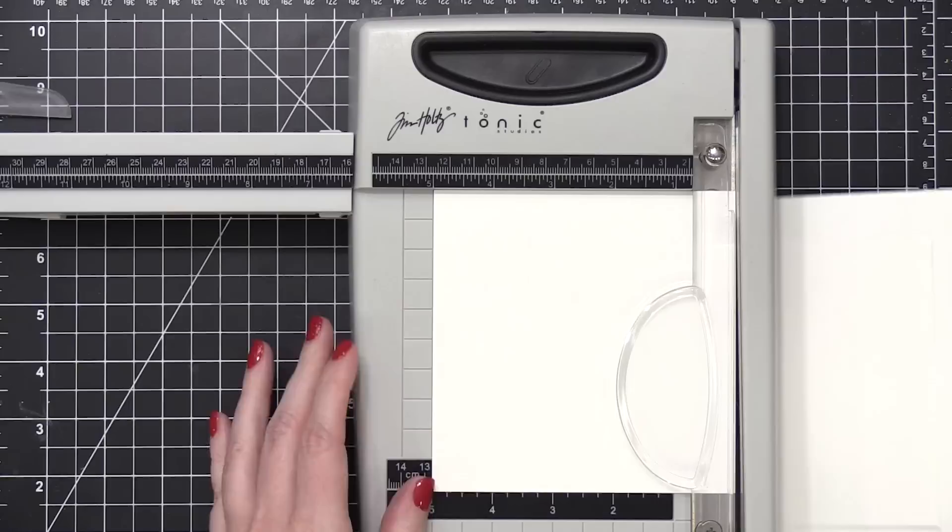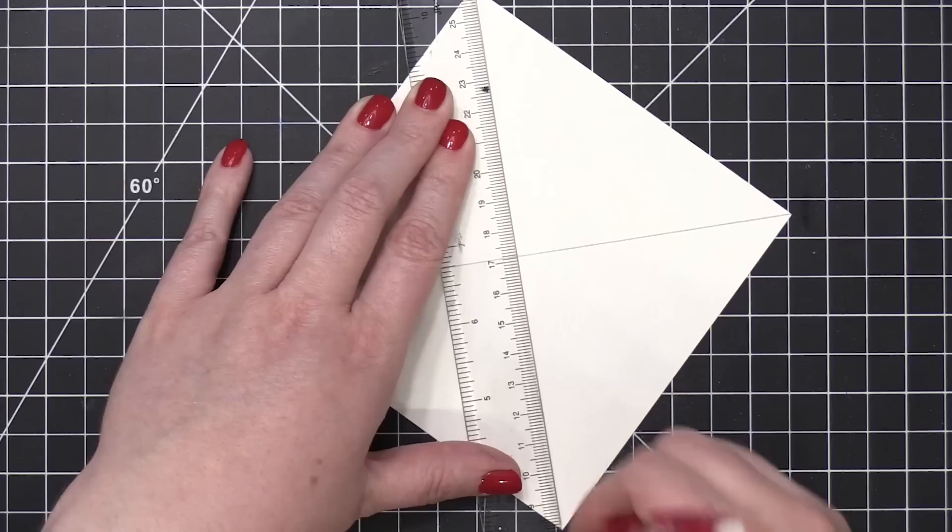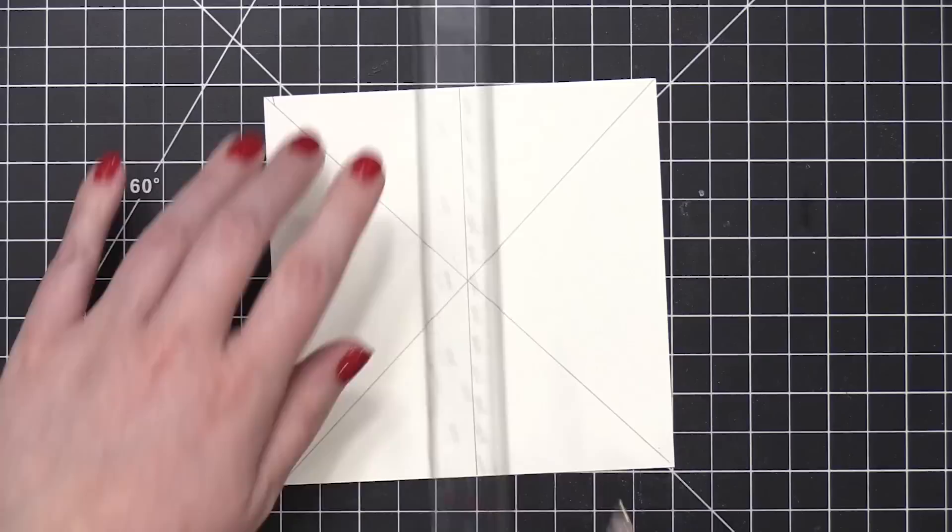And I'm going to be creating a very geometric, kind of rotating circle sort of design. Starting out with some five by five cardstock and I'm using a ruler and I'm connecting the corners and drawing a line each way. This will mark the very center of this square cardstock.